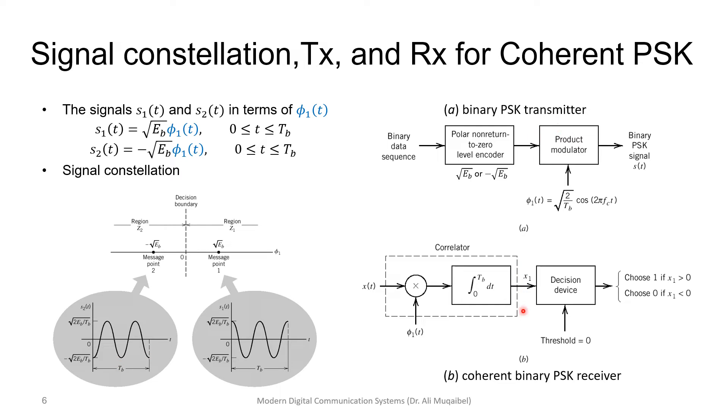If you want to see the transmitter and the receiver, we have a binary sequence data. This data is going to be represented with plus or minus, and then, of course, multiplied by a product modulator. And this cosine would be either positive or negative and scaled by the proper energy.